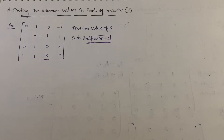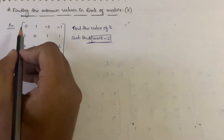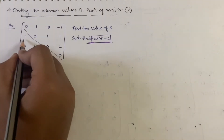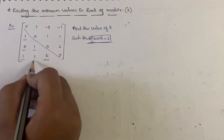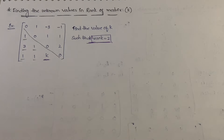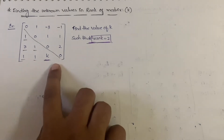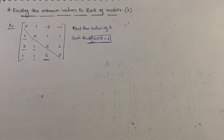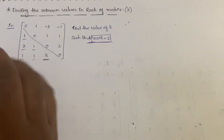So the first step is identifying the diagonal in echelon form. Identify the diagonal and mark all elements below the diagonal — you need to make all these elements zero. If a row is already a zero row, you can also apply transformations.